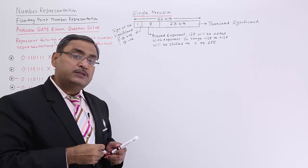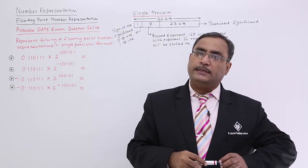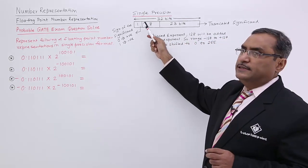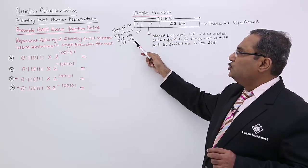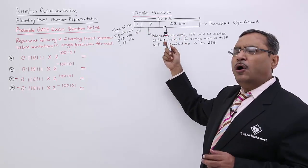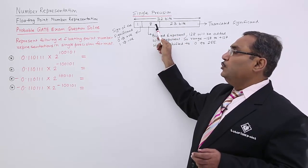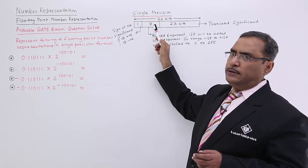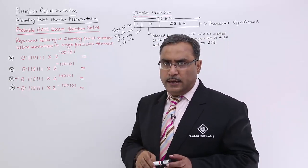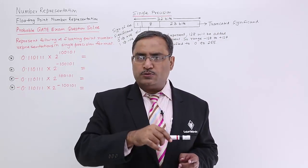Single precision means it will have a 32-bit representation, and the 32 bits will be divided into 3 sections. One is the sign for the significand, which will be 0 or 1 depending on whether the significand or mantissa is positive or negative respectively. Then we have the biased exponent of 8 bits, and then the truncated significand of 23 bits. Please watch the previous videos where we have explained this in detail.